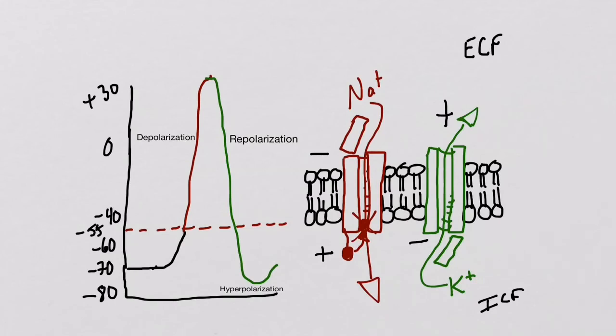As the potassium voltage-gated channels close, extra potassium ions are moved to the outside, which causes a hyperpolarization phase. The sodium-potassium pump continues to work to get the resting membrane potential back to negative 70 millivolts.